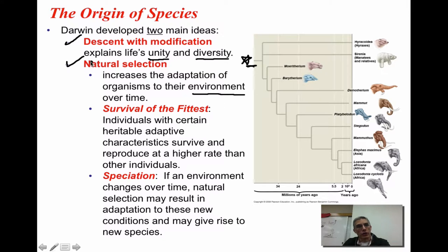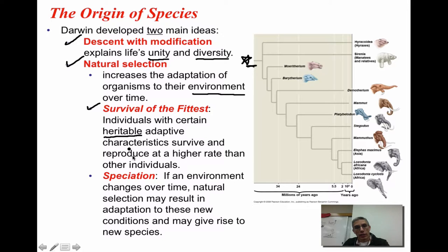The second idea Darwin came up with was natural selection — based on the environment itself, it would select those animals best adapted for that environment. We often use the phrase 'survival of the fittest,' meaning individuals with certain heritable adaptive characteristics are the ones that survive and reproduce at a much higher rate. If this happens over a long period of time, it leads to speciation — if an environment changes, natural selection results in adaptation to those new conditions, and that could possibly give rise to a new species.